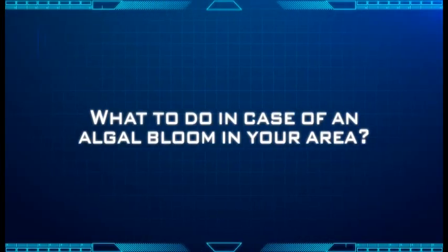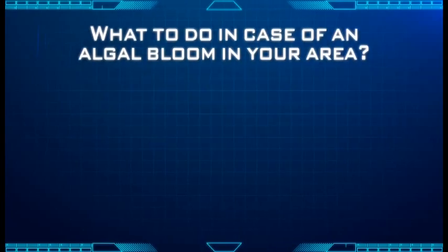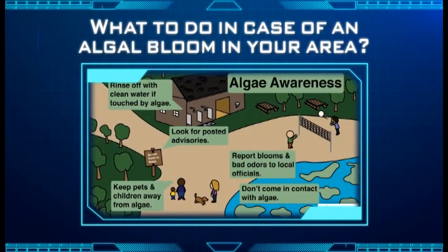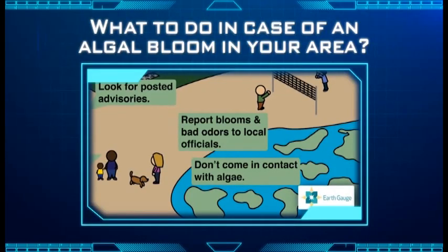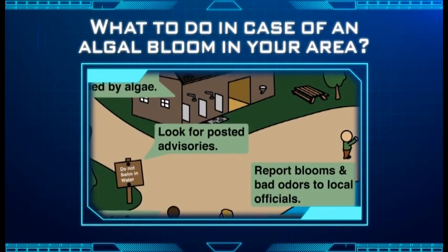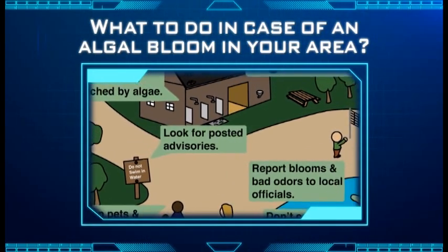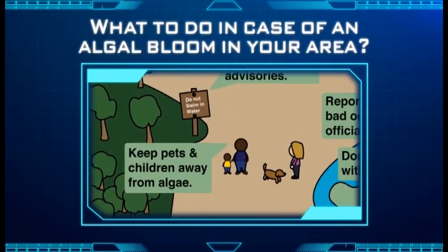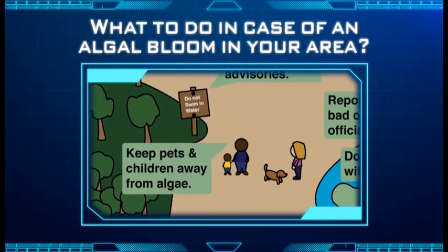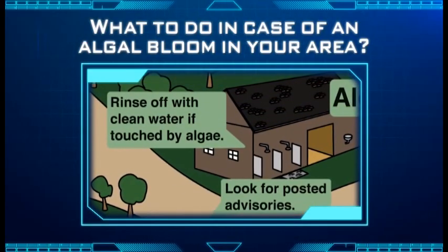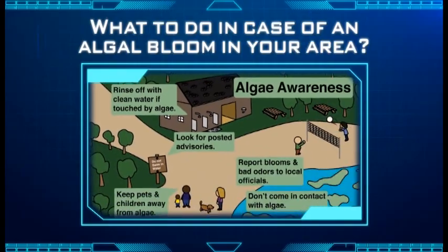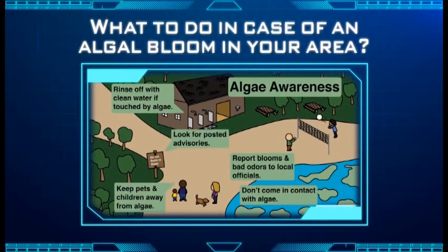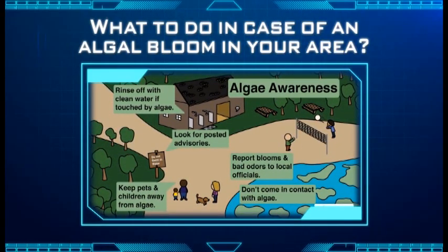What to do in case of an algal bloom in your area: When you notice a bloom in your area, report the blooms and bad odors to local officials if you haven't noticed any posted advisories. Keep pets and children away from the algae. Rinse off with clean water if touched by algae. Also, avoid consumption of contaminated seafood.